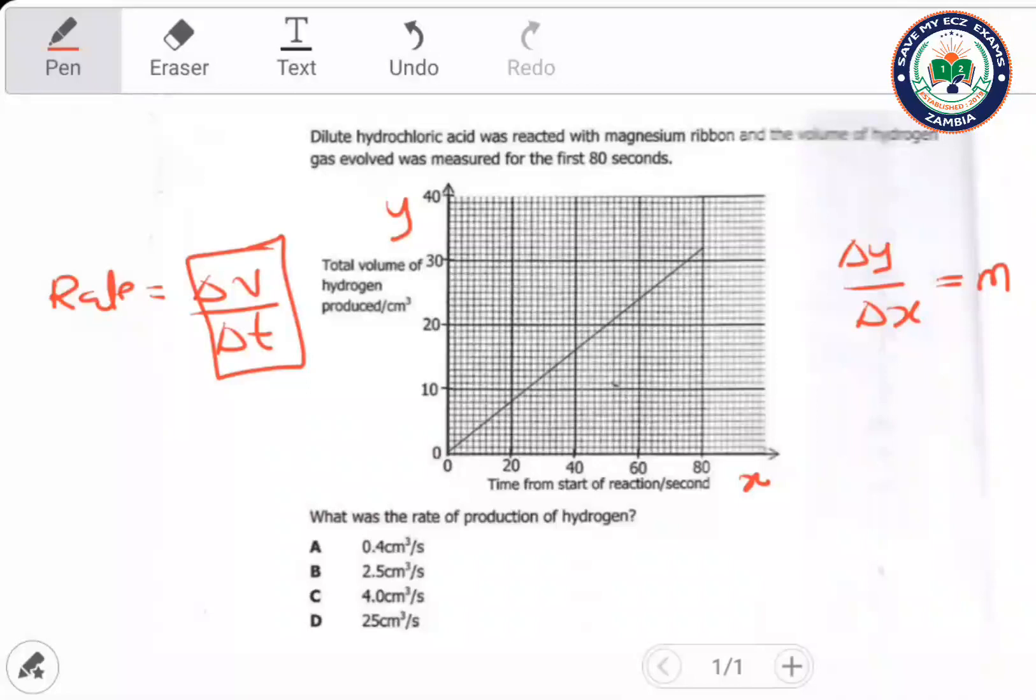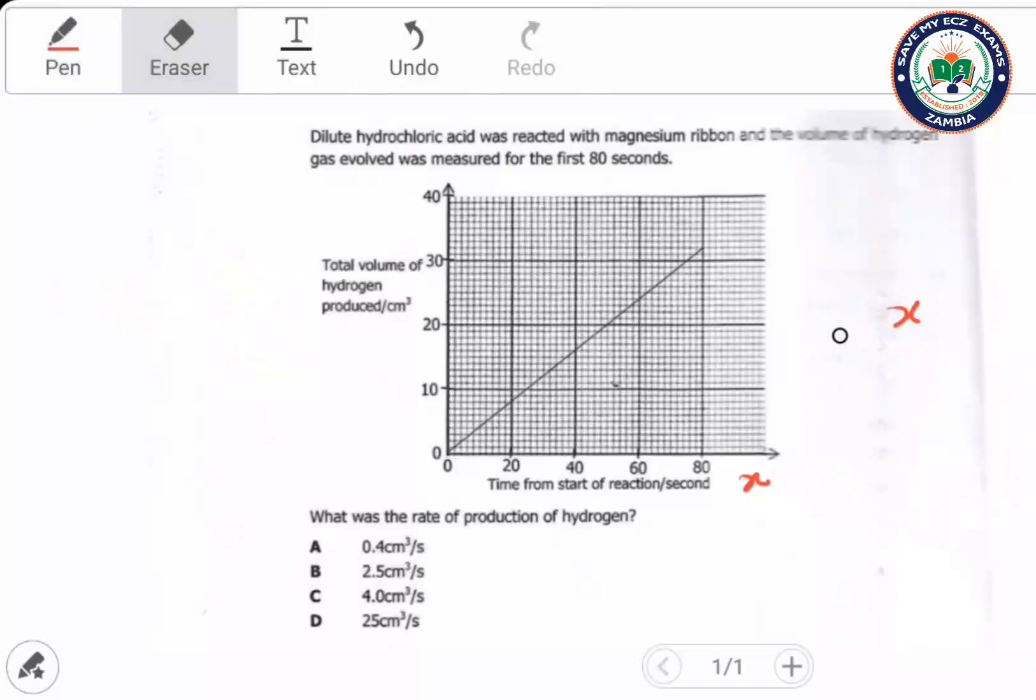We're going to pick a point where we can find change in volume and change in time properly. What if we get from here, from zero to there? We find the change in volume and change in time. The change in volume is from there to there, and the change in time is from there to there.